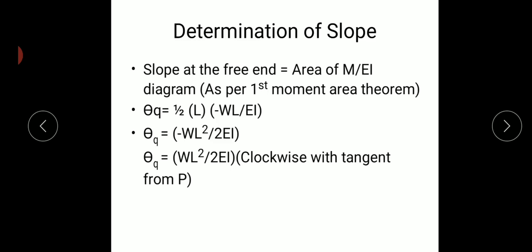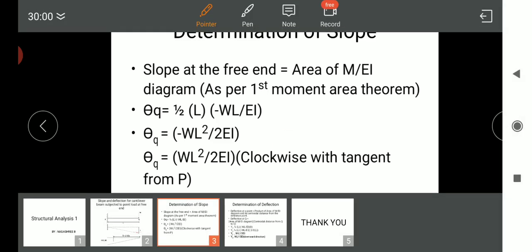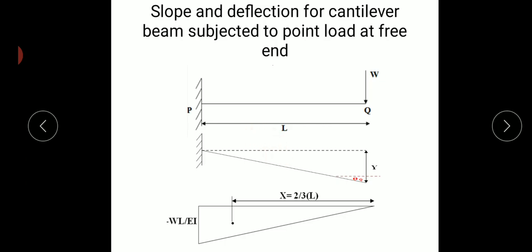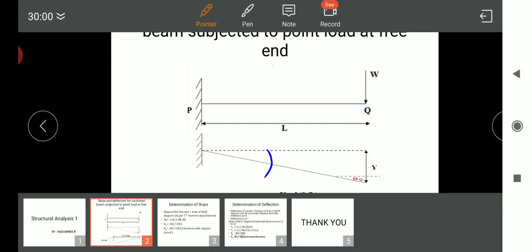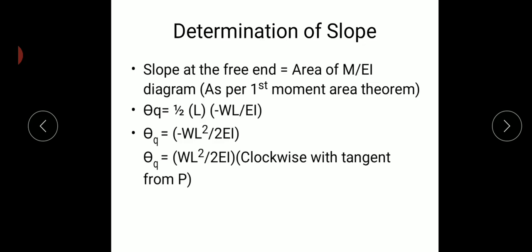The result becomes positive because the tangent from point P makes a clockwise angle. Observing the figure: the dotted lines show the initial position and the solid line shows the final deflected position. The angle theta at point P is a clockwise angle, so it is taken as positive when measured from point P. This completes the determination of slope.